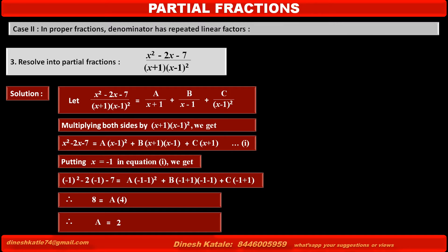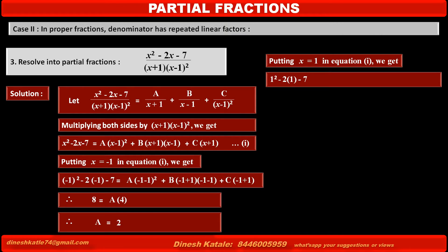Now it is easy to find the value of C first, by cancelling the terms of A and B by making their common bracket (x-1) equal to zero. Therefore, putting x = 1 in equation 1.